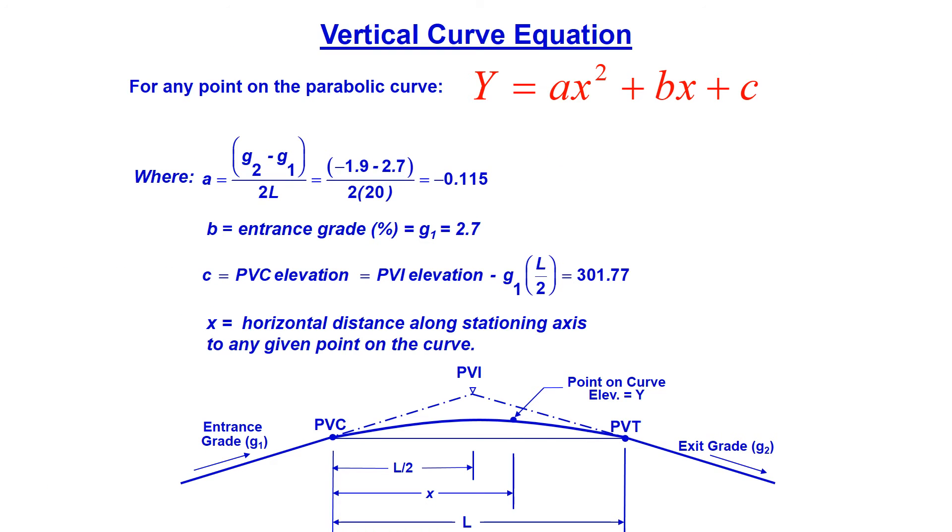This is how it all fits into our parabolic equation: Y = ax² + bx + c. Our term a is (G2 - G1)/(2L), so (-1.9 - 2.7)/(2 × 20) gives us a value of -0.115.